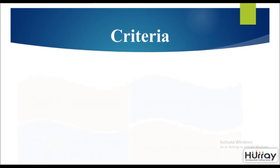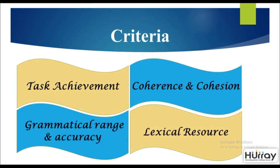The criteria for academic report writing are task achievement, coherence and cohesion, grammatical range and accuracy, and lexical resource. These cover components like analyzing and mentioning all points of the task in a coherent manner, using the right sentence structure and all forms of grammar including parts of speech, as well as a wide range of vocabulary.